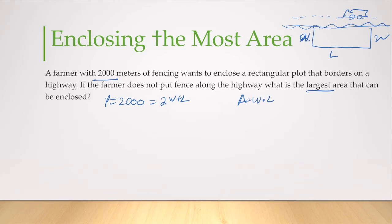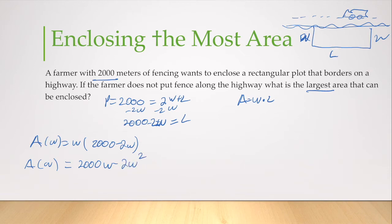If I write this in terms of W, I need to solve this for L. I'm going to subtract 2W from the other side, so I have 2,000 minus 2W equals L. So A of W equals W times 2,000 minus 2W. So A of W equals 2,000W minus 2W squared. We're going to rewrite that so I've got my leading term, my leading degree term first.